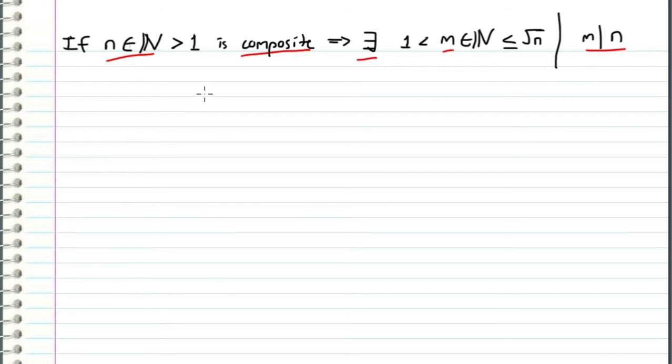So alternatively, we can think about this statement as we have an integer n that is composite, therefore it has factors other than 1 and itself, and we want to show that one of these factors will always be less than or equal to the square root of n.